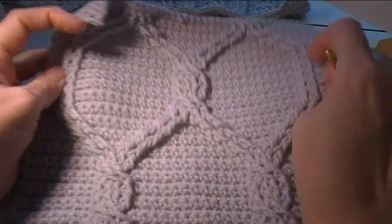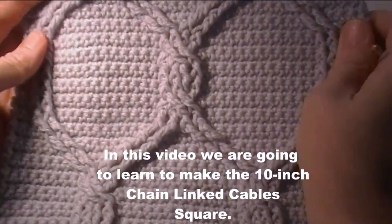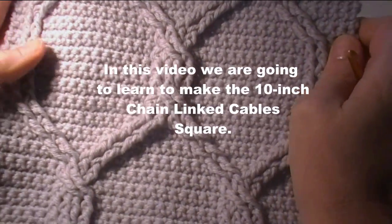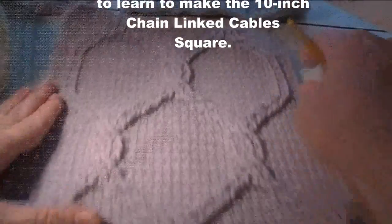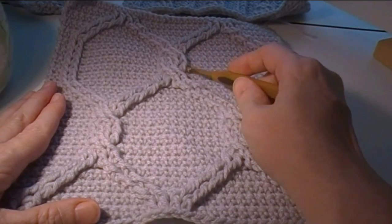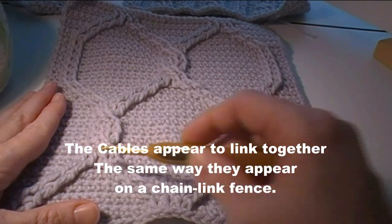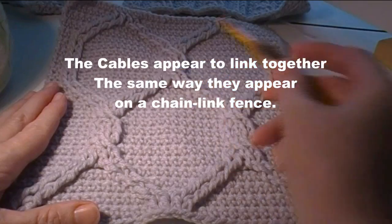In this video we're going to learn how to make the 10-inch chain link cables square. The cables appear to link together just like you would see on a chain link fence.